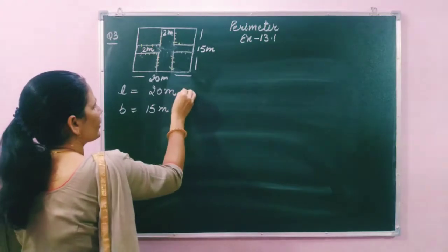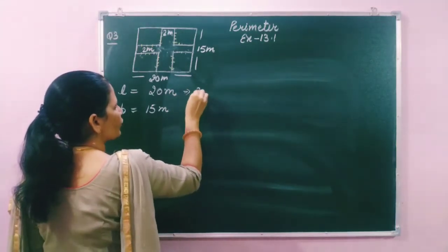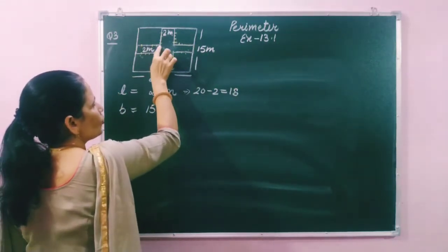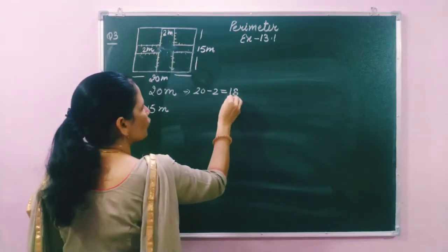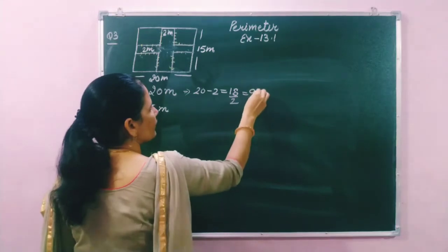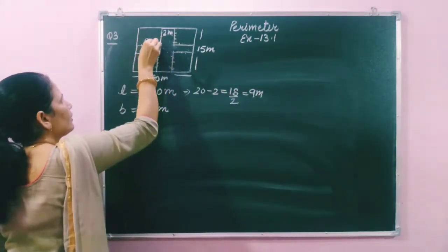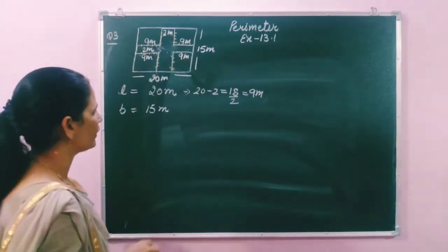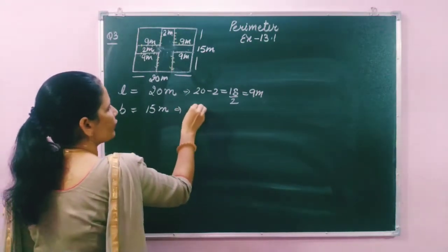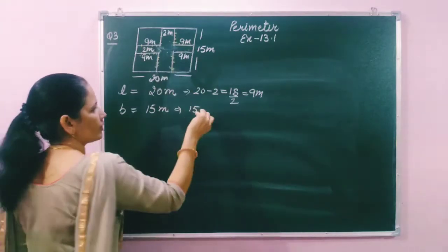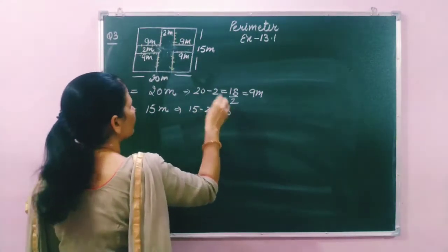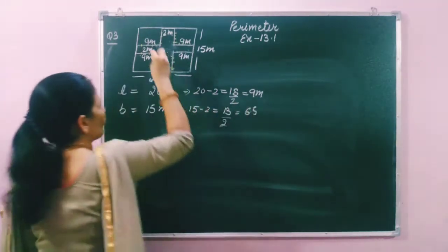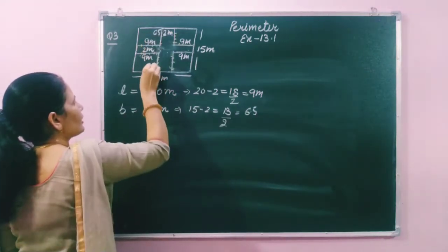If we subtract 20 minus 2, we get 18. This 18 is divided into 2 equal parts, so each part is 9 meter — so 9 and 9. Similarly for the breadth: 15 minus 2 gives 13, and 13 divided by 2 gives 6.5. So all four sides of that section will be 6.5 meter each.